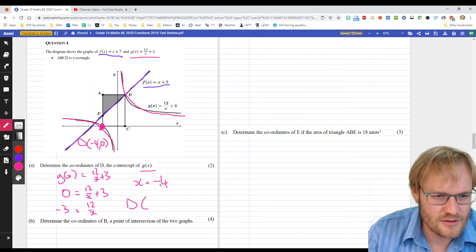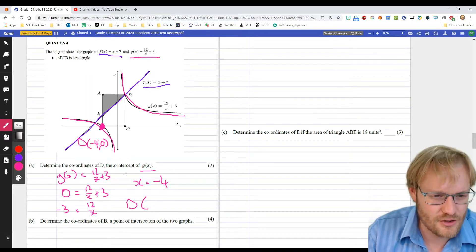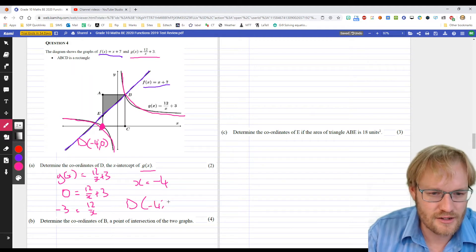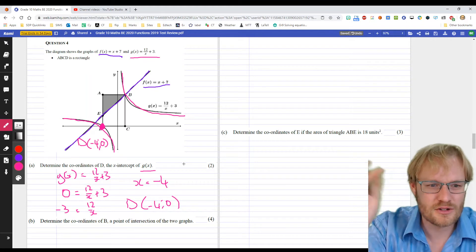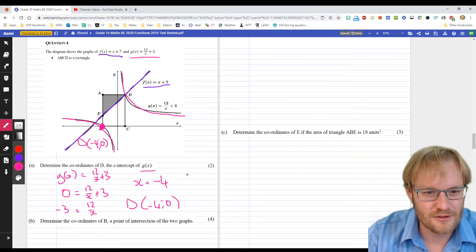that's negative 4. Didn't ask what's the X-value, it said the coordinates of D, so negative 4, 0. We've been writing as coordinates the whole test, so we're good to go on that.